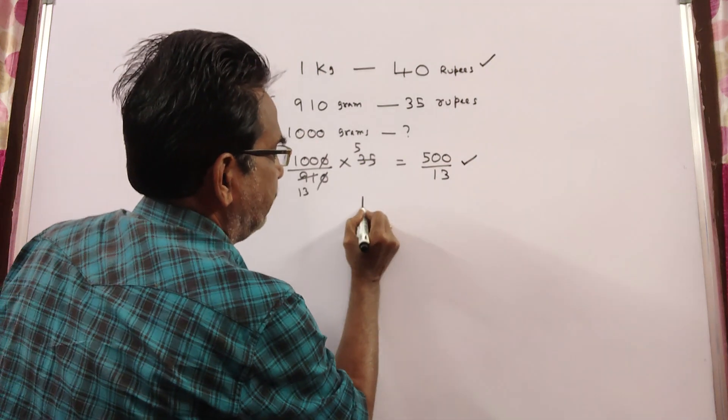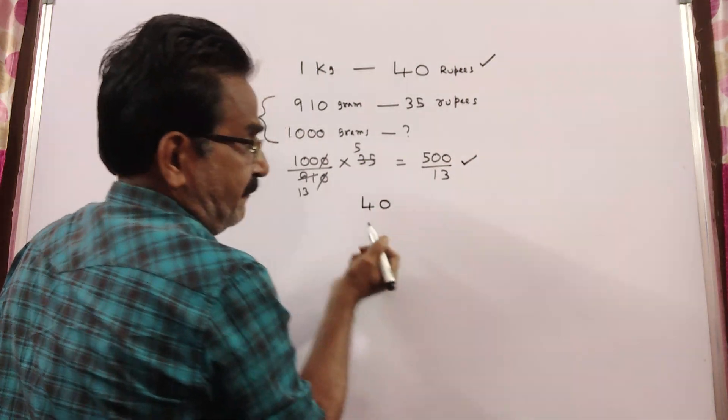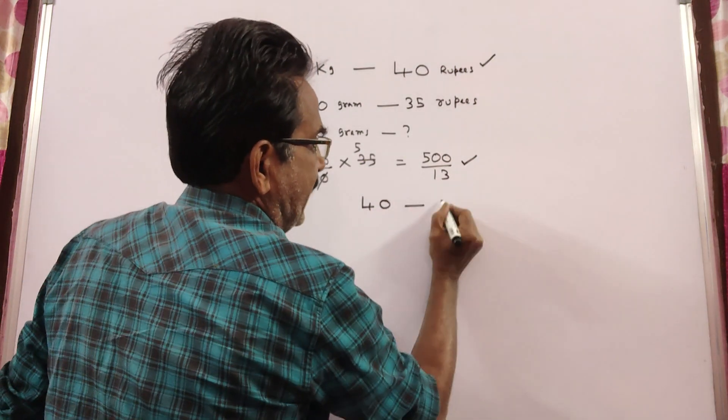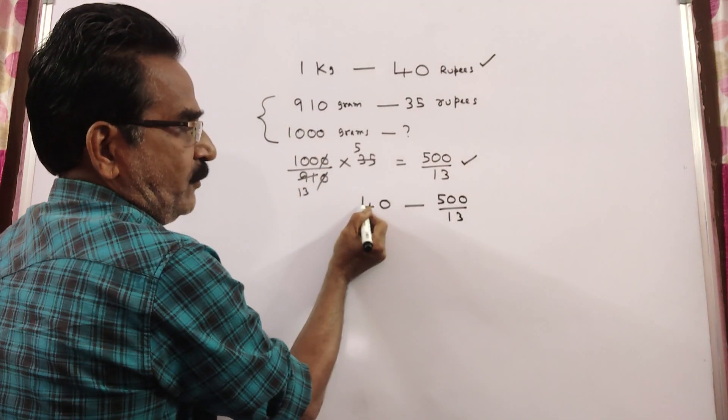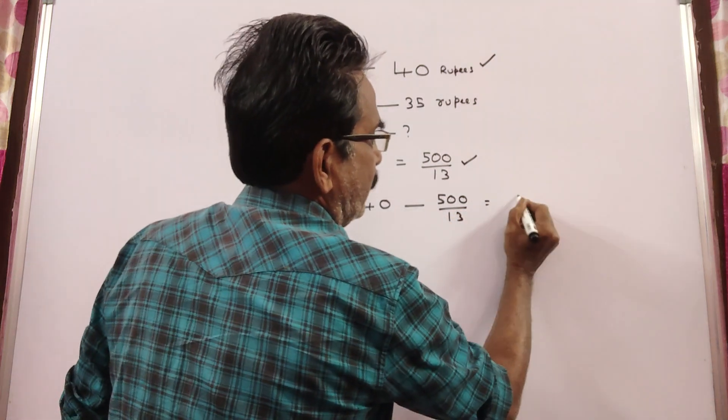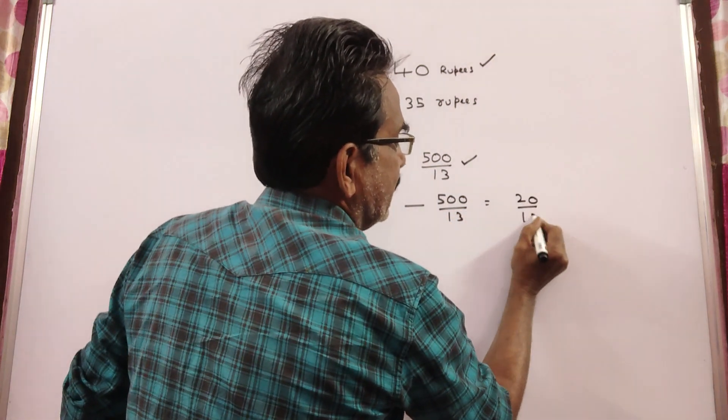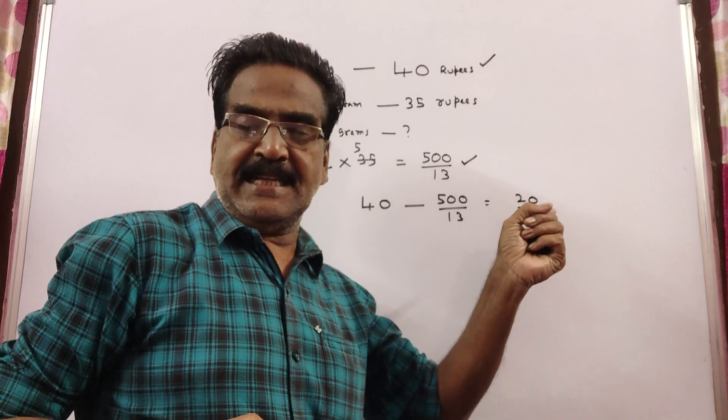What is the decrease in price? Originally he fixed price at 40 and he is selling at 500 by 13. 40 is 520 by 13 minus 500 by 13, which equals 20 by 13. This is the decrease.